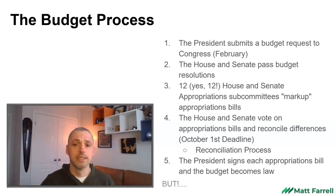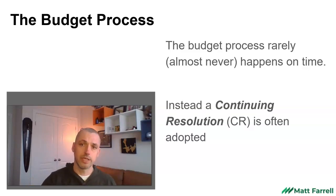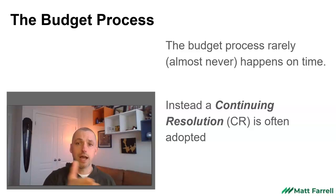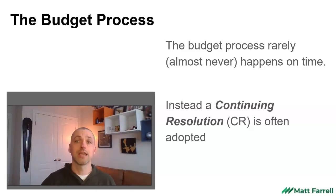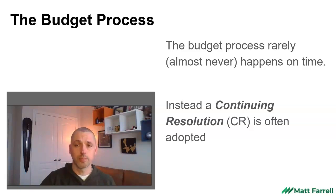It's a long process, and it doesn't always work that way — there is a big but. The process rarely happens on time. In fact, it almost never happens on time. It is rare that Congress completes the regular budget cycle. Instead, what happens is the time elapses, the deadline passes, and Congress must pass a continuing resolution, or CR. All that does is say we don't have a budget — let's just continue the old budget for another period of time. It is a resolution that agrees to continue the last budget for a few more months.